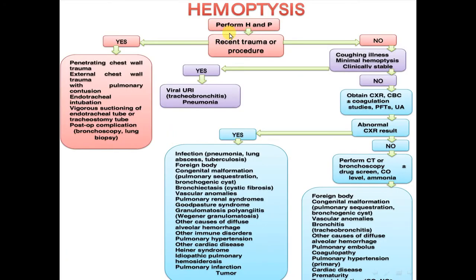How to approach a child with hemoptysis after performing history and physical examination? First, is there recent trauma or procedure? If yes, consider penetrating chest wall trauma, external chest wall trauma with pulmonary contusion, endotracheal intubation, vigorous suctioning of the endotracheal tube or tracheostomy tube, or post-operative complications like bronchoscopy or lung biopsy.